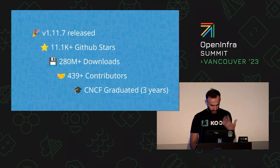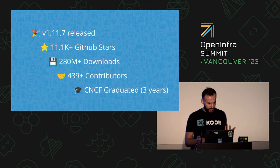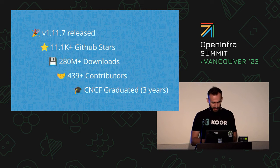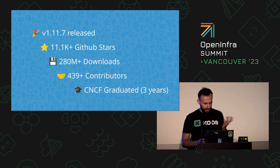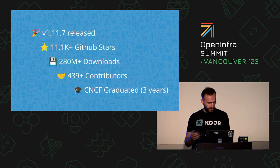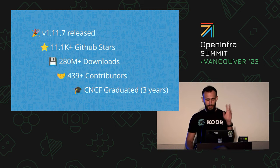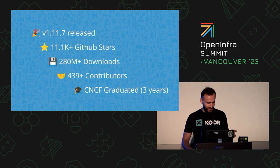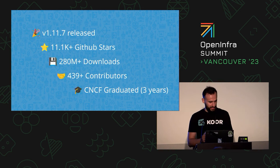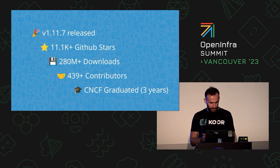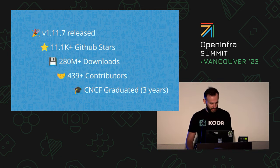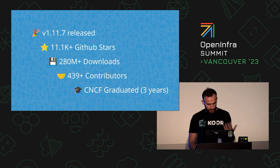A little bit about the Rook project: version 1.11.7 was released recently. It has over 10,000 GitHub stars, and according to Docker Hub statistics, it has 280 million downloads. There are over 430 contributors, and it graduated from the CNCF Cloud Native Foundation about three years ago, so it's pretty stable.